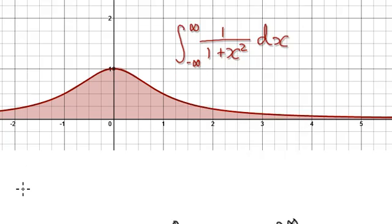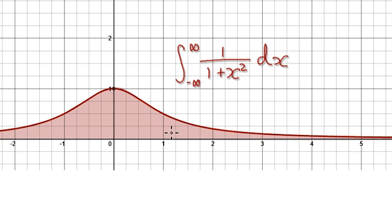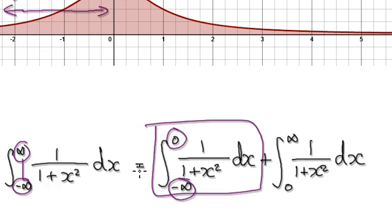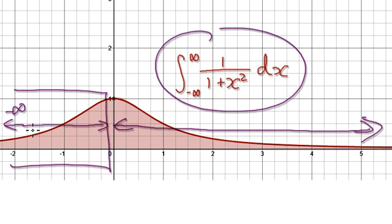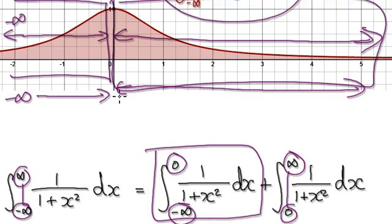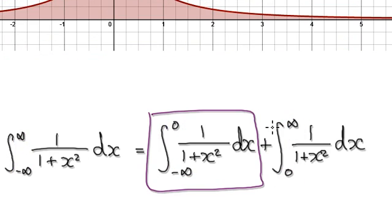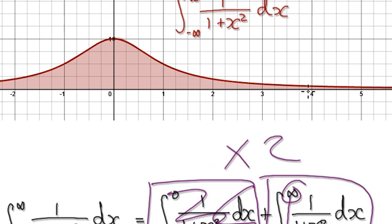To do this properly, if you want to evaluate it from negative infinity to infinity, you need to break it up and work it out from negative infinity to zero, and then from zero all the way to infinity. But an easier way, rather than breaking this up into two separate parts, let's just work this out from zero to infinity and then multiply by two because it's an even function.